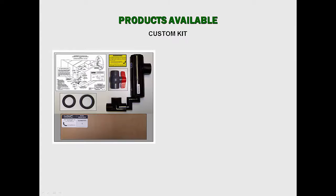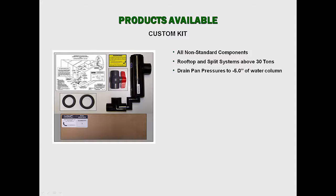Custom kits include all non-standard components needed for installation, and are suitable for all manufacturers' rooftop units and split system air handlers above 30 tons, with drain pan pressures to negative five inches of water column, and are available in three-quarter, one, one-and-a-quarter, one-and-a-half, and two-inch drain sizes.